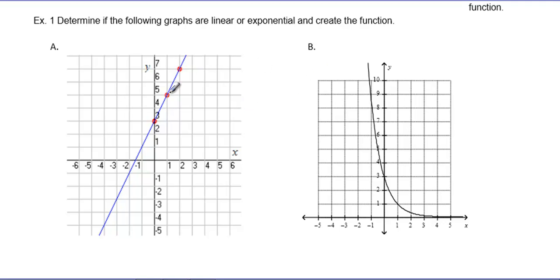For A, we have a linear equation. We know it's a linear equation because we have a graph of a straight line. Linear equations have a constant rate of change, which means when I count the slope, it's going to be the same from the first point to the second point and all the way up.